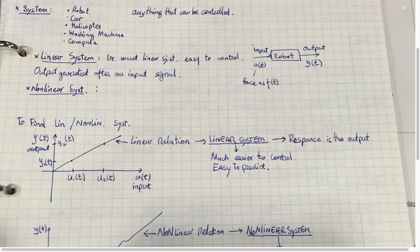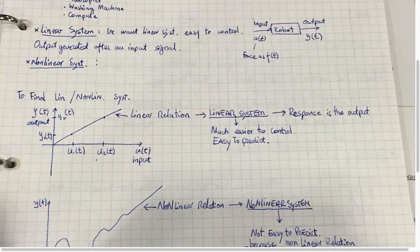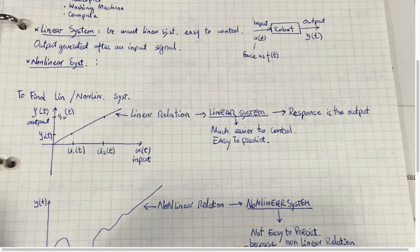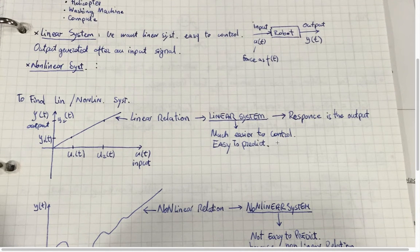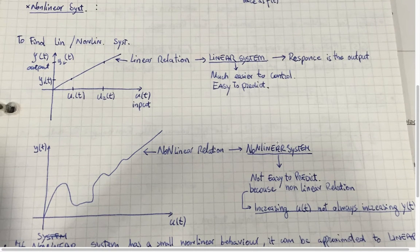This is the graph of the linear system and we can see that it's a straight line. U is the input and Y is the output. Much easier to control and its response is the output.